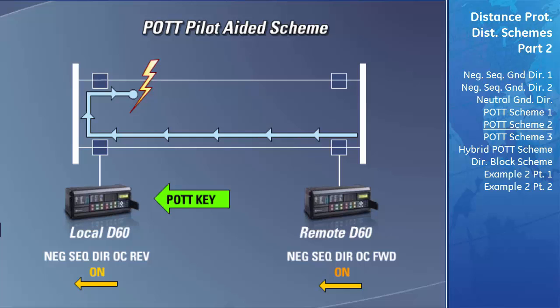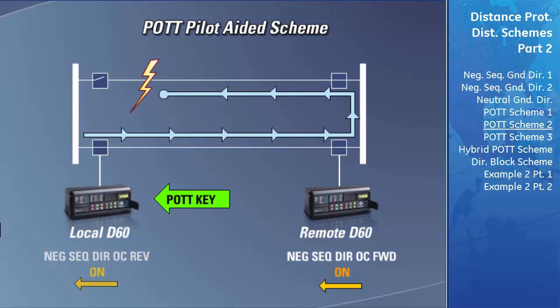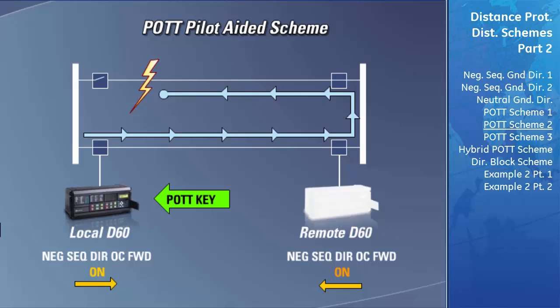After a certain time period, the breaker on the parallel line will trip to clear the fault. The ground current would then begin to flow through the transmission line in the opposite direction. The local D60 will then identify that the ground current is flowing in the forward direction. However, due to the delay in the communication channel, the POTT permissive key will not immediately be removed. Since the local D60's negative sequence directional element indicates a forward fault and the local relay is still receiving the permission key, the POTT scheme could cause the breaker to trip, unnecessarily shutting down the transmission line.